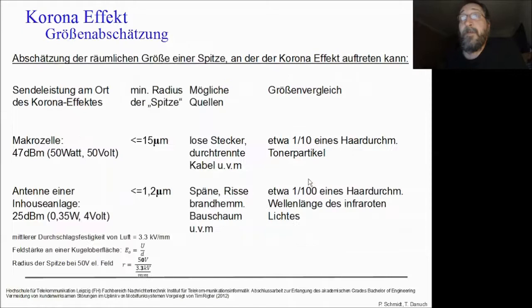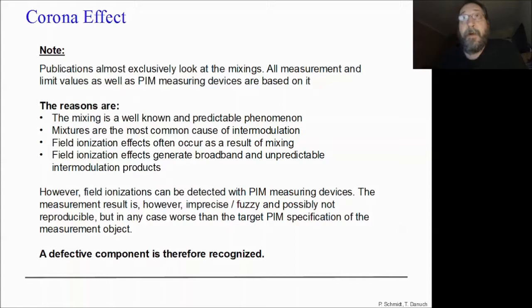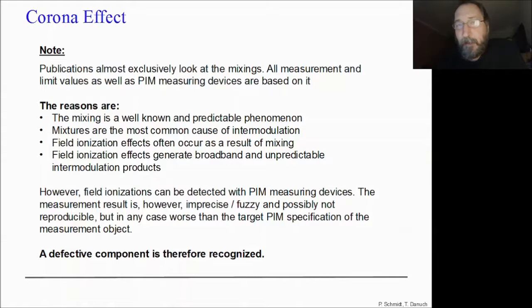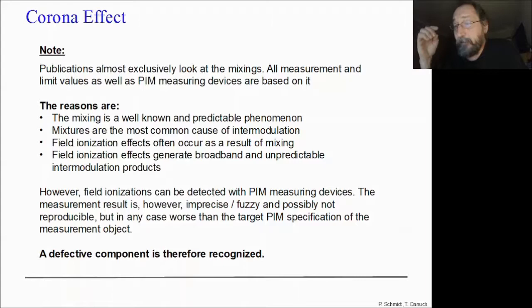We tried to calculate the diameter of the tip — from 15 micrometers to 1.2 micrometers. You have to be aware of that for publications. Almost all measurement and limit values are based on mixing products and not on corona effects. The corona effect's frequency cannot be calculated in advance. But it is possible to measure it with a PIM analyzer — with a two-tone PIM analyzer you can measure this corona effect. However, the result doesn't give a real value to definitively say this is a corona effect or not, but I can see if the antenna is broken or if it's okay.